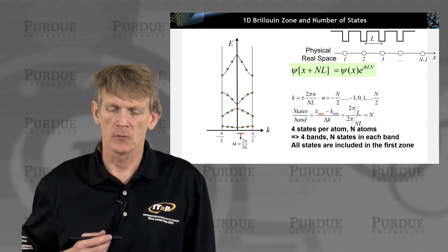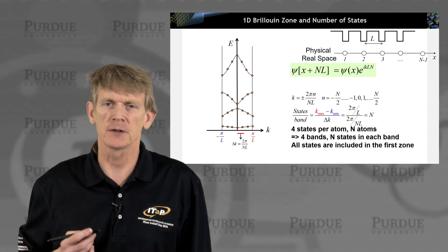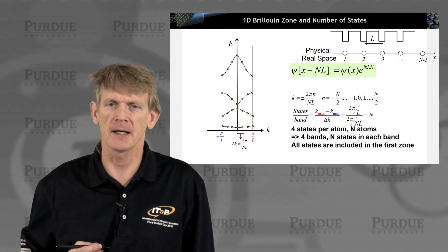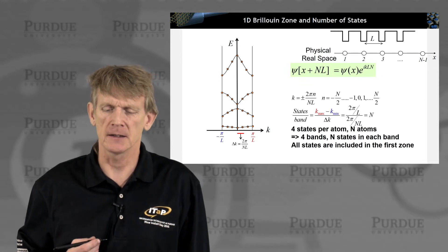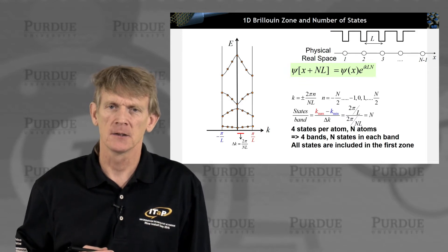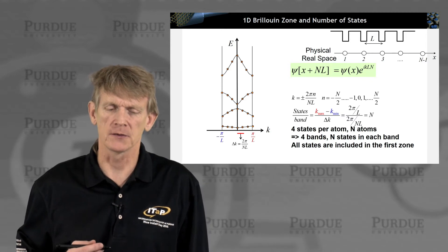So what we did state very clearly that you have, say, four states per atom. And if you have N atoms, that means you get four bands and N states in each band. And all the states are included in what we call the first zone.